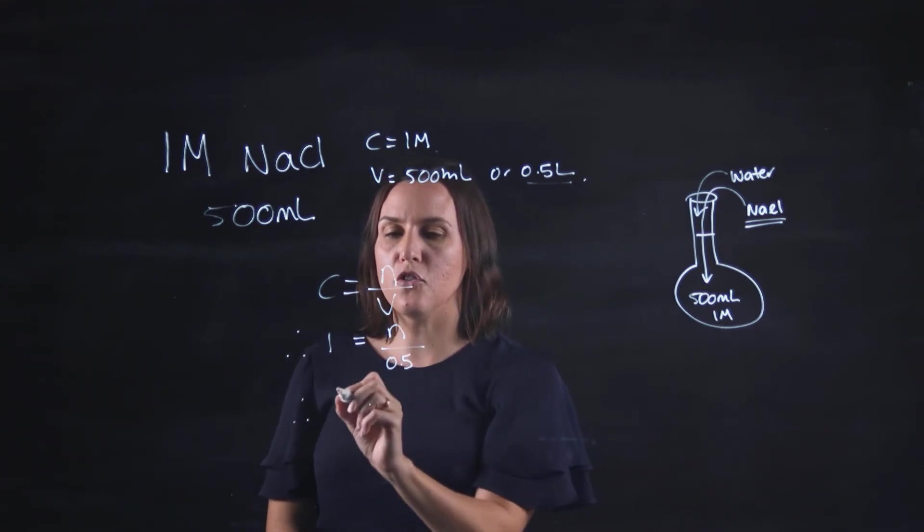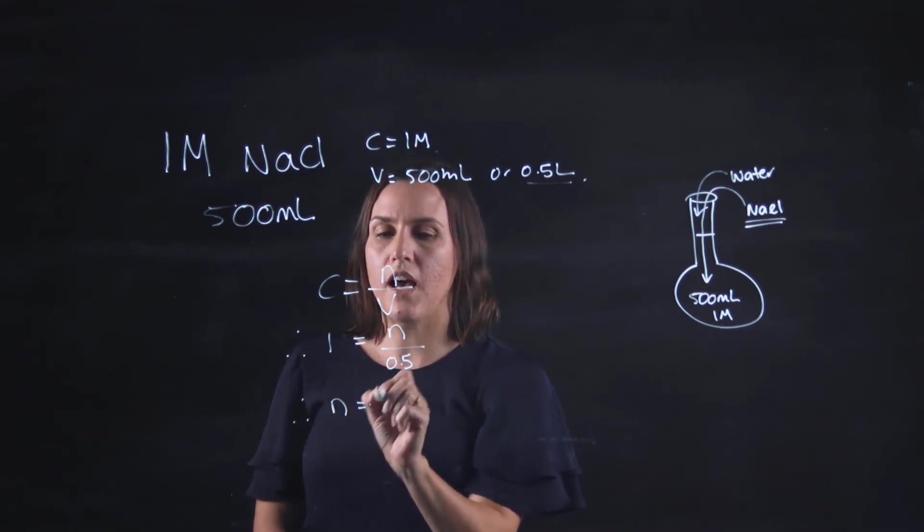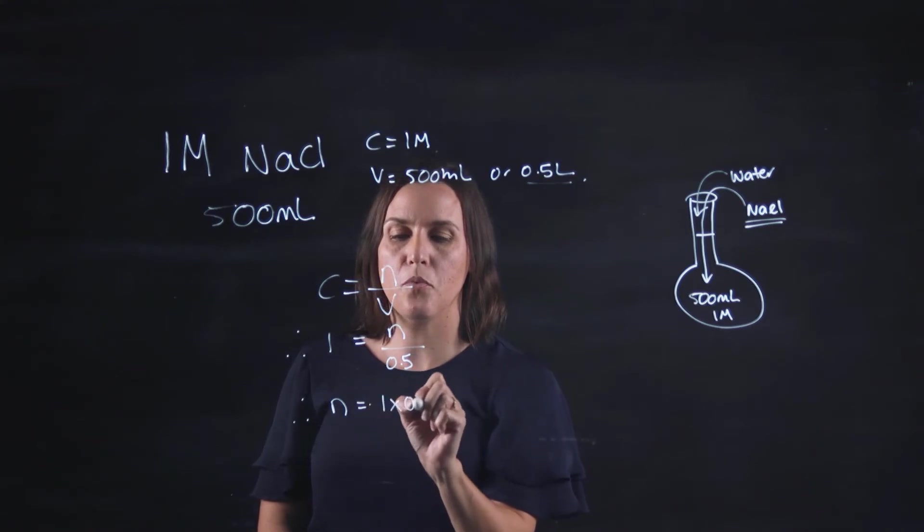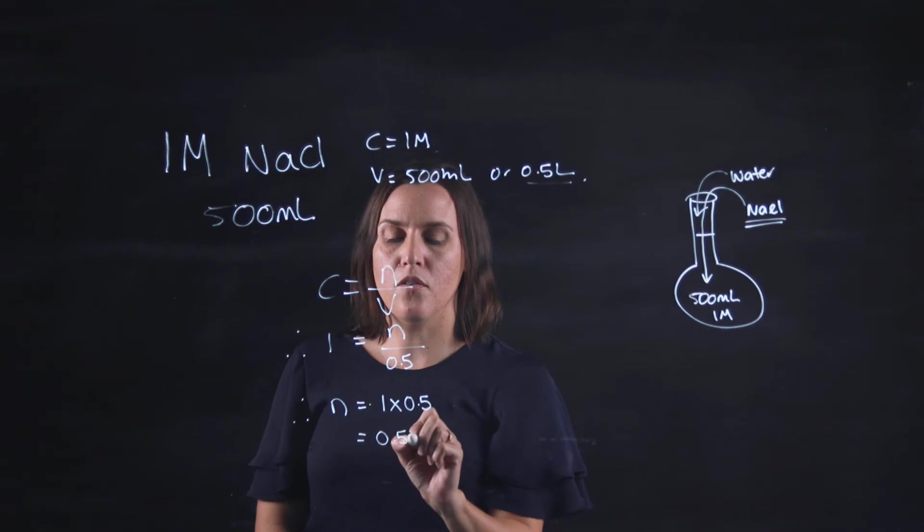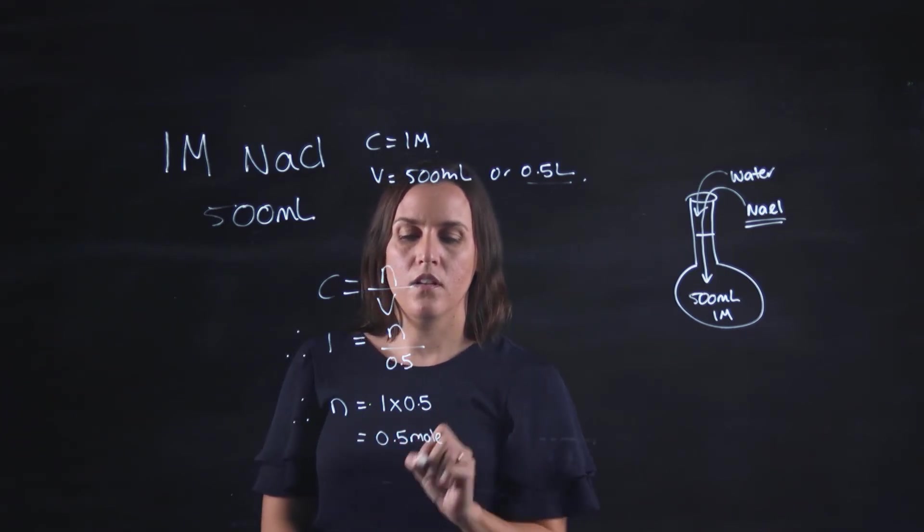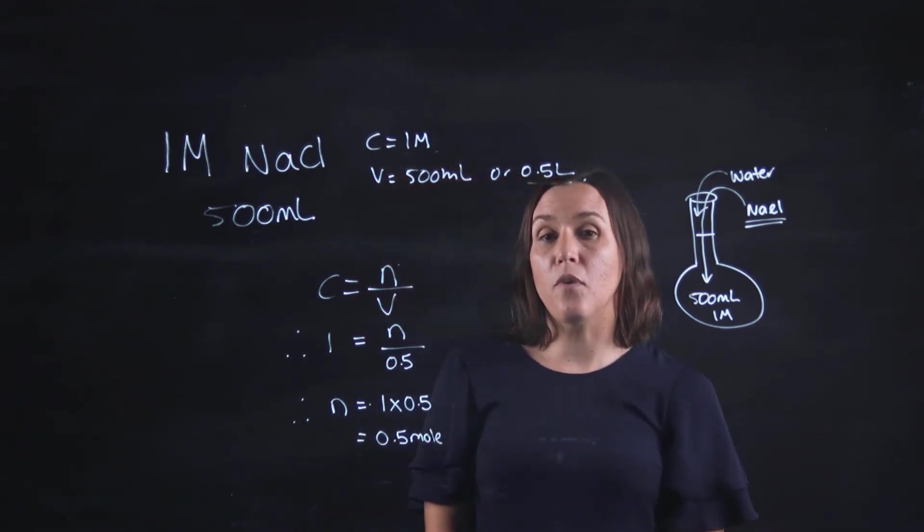So then to get the n by itself I take the 0.5 over so it's 1 times 0.5 which will give me 0.5 mole. So I need 0.5 moles.